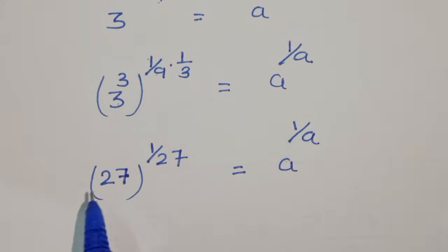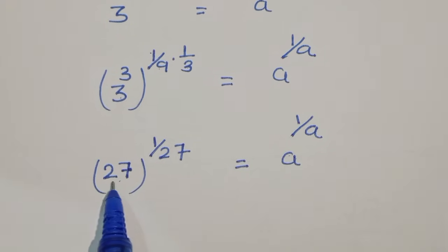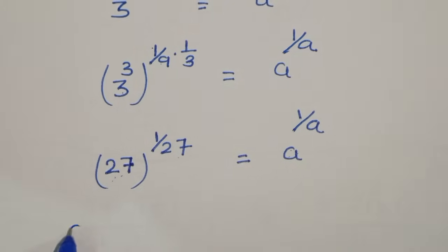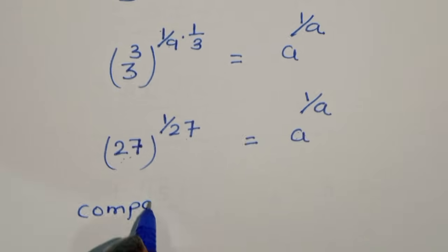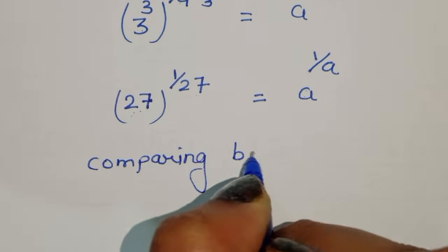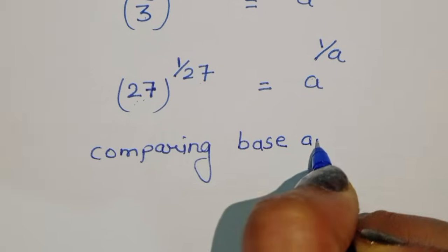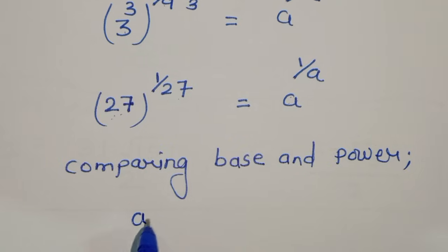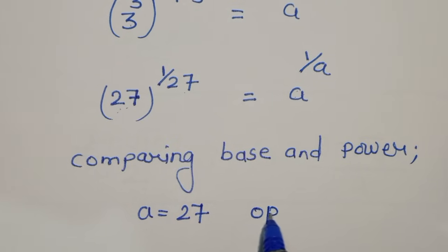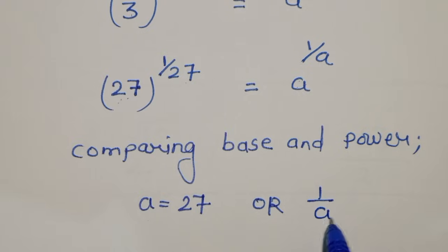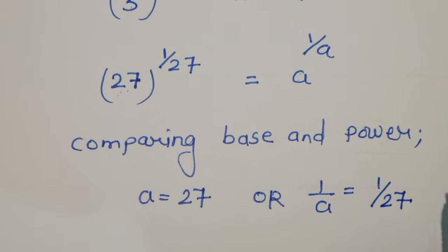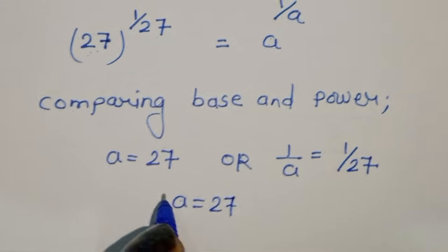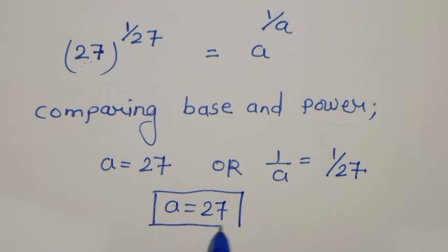Now comparing base and power: the base is 27 and the power is 1 upon 27, and here we have 1 upon a. So comparing base and power, we can say a is equal to 27, or 1 upon a is equal to 1 upon 27. Therefore, a is equal to 27. This is the solution for this equation.